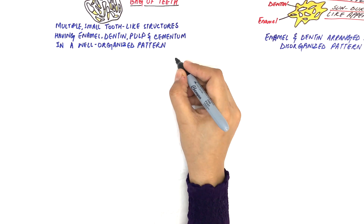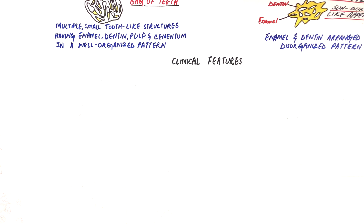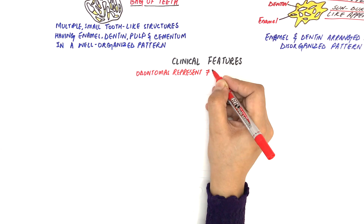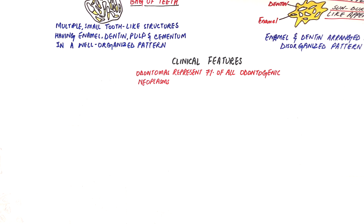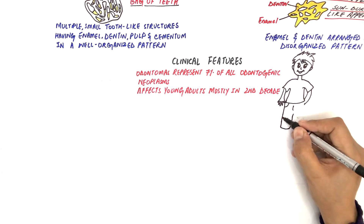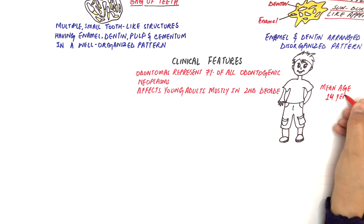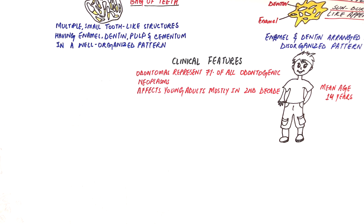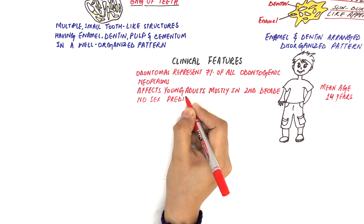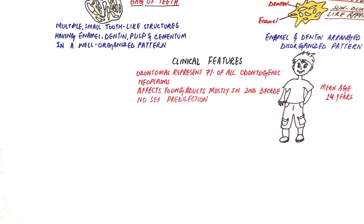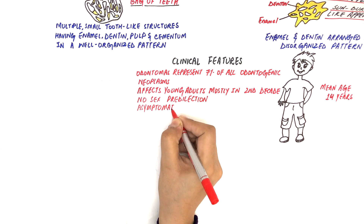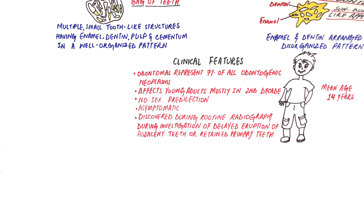Odontomas represent about 7% of all odontogenic neoplasms and usually occur among children or young adults, preferably in their second decade of life, with the mean age being 14 years. The lesions are asymptomatic, and since they are asymptomatic, they are discovered on a routine radiographic examination during investigation for the delayed eruption of adjacent teeth or retained primary teeth.